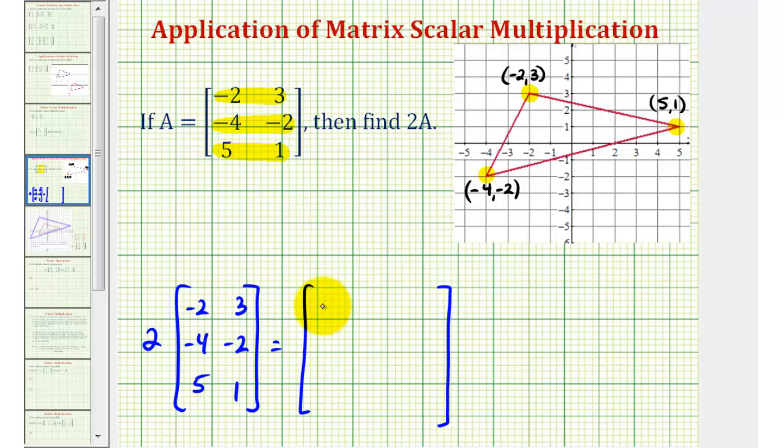For row 1, we have 2 times negative 2, and 2 times 3. For row 2, we have 2 times negative 4, and 2 times negative 2. For row 3, we have 2 times 5, and 2 times 1.